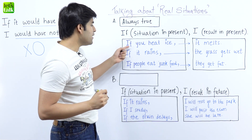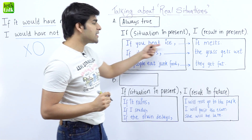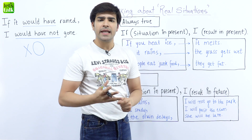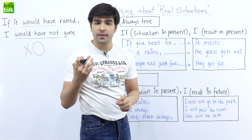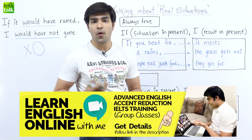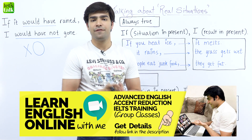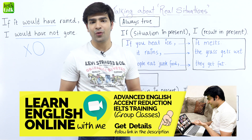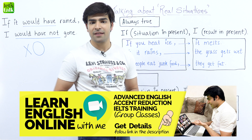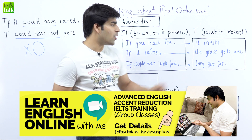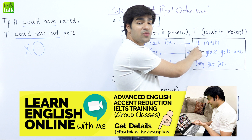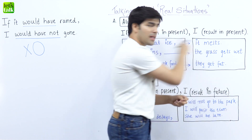The first example: if you heat ice, what happens? It starts to melt automatically. It is the universal rule, it is the general truth of life. If you heat it, it starts to convert itself into liquid form — and that is what we describe in the result part: it melts.